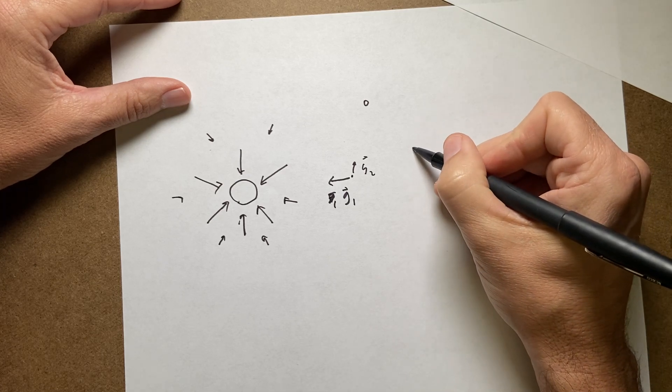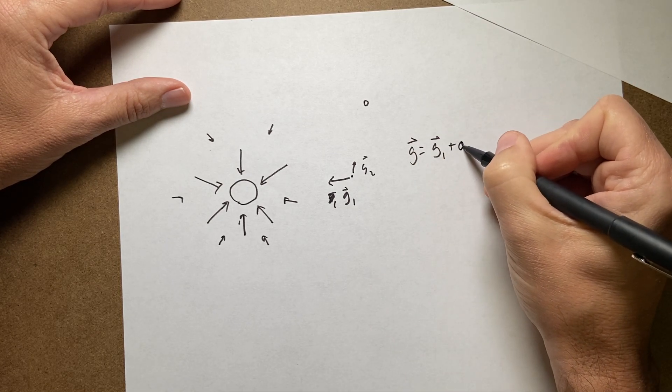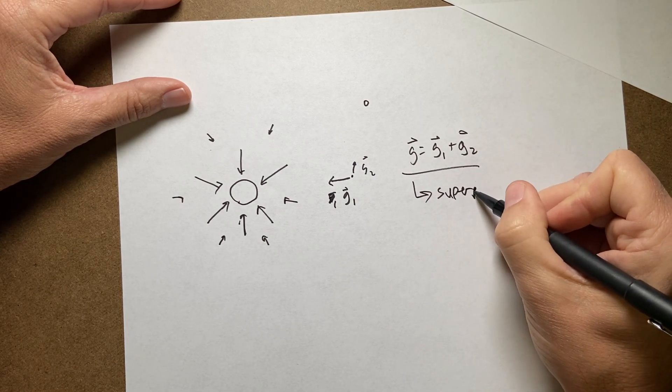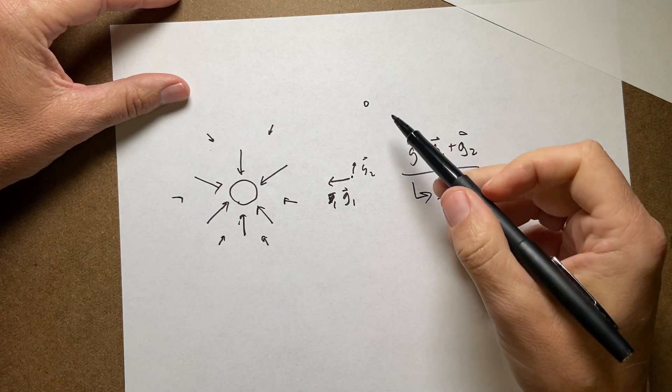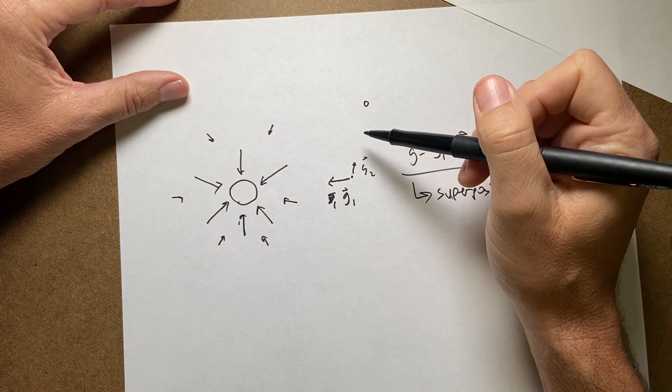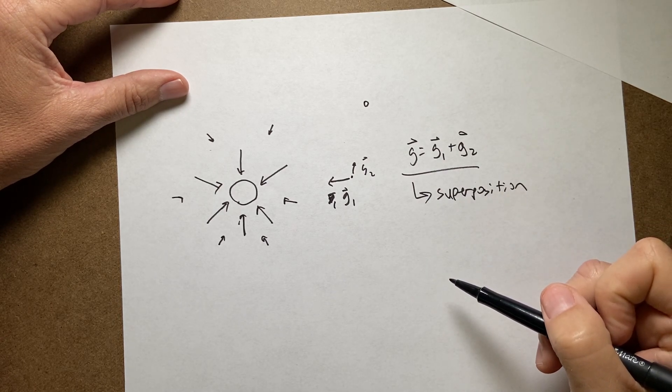The total gravitational field G is just the vector sum G1 plus G2. And we call this superposition. So if I want to find the vector at any particular location due to any number of masses, I can just take the individual gravitational field due to the individual masses and add them together. And that's the gravitational field.